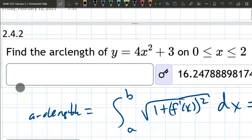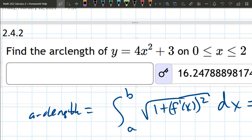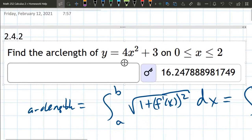We're just going to use the arc length formula. It's the square root of 1 plus the derivative of the function squared. So don't plug in 4x squared plus 3. Take the derivative first.